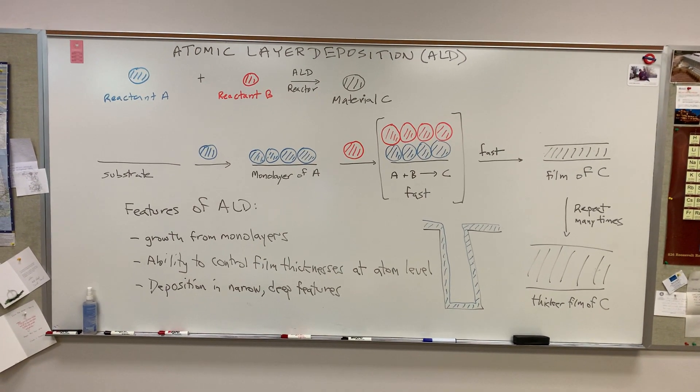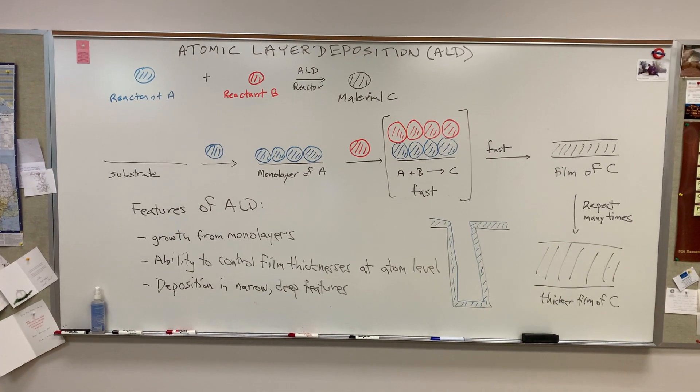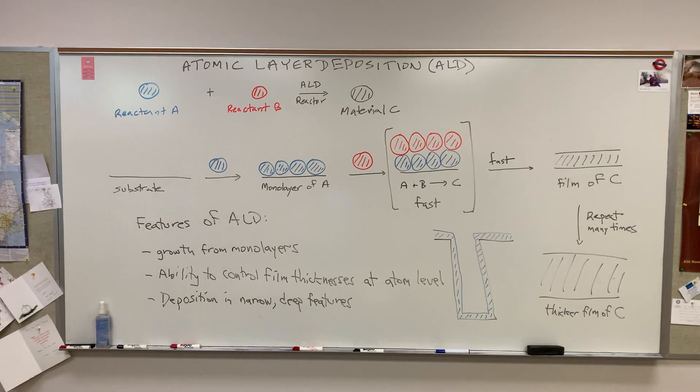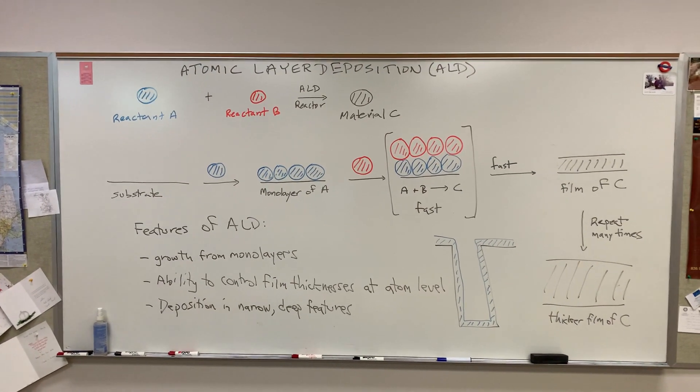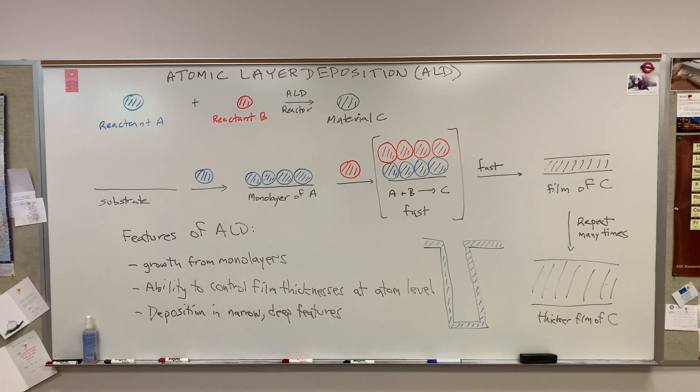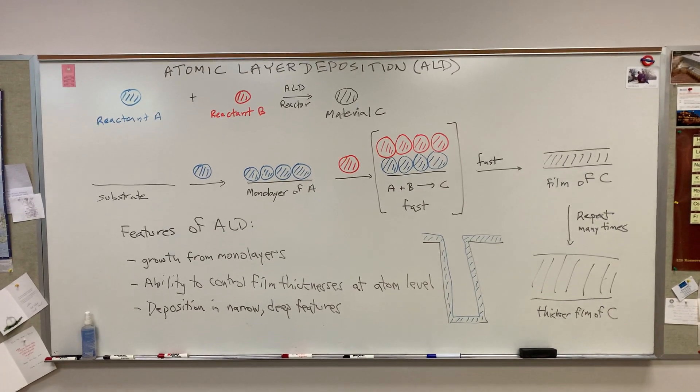In the top, in blue and red, you take chemical reactant A and chemical reactant B, and the chemistry of these precursors is designed so that they react rapidly in an ALD reactor to give material C.